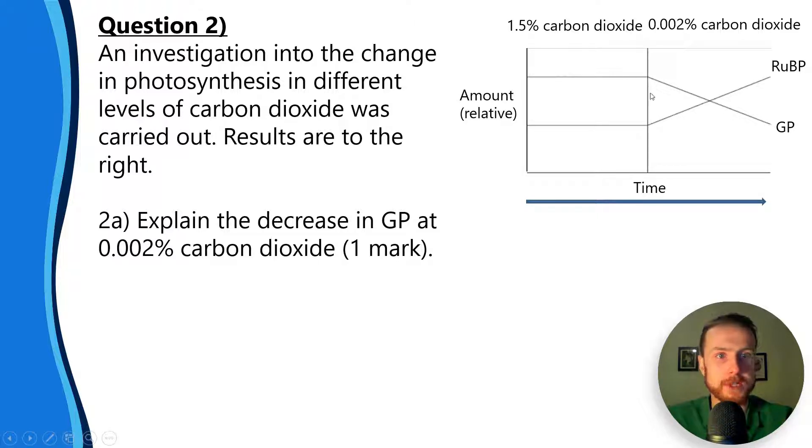The amount here is at high level in the high carbon dioxide condition and it's plateaued, and then it drops - that's GP. So high when we've got high carbon dioxide, low when we've got low carbon dioxide. RuBP is the exact opposite - it's plateaued at a low level in high carbon dioxide and then it goes high when there's less carbon dioxide.